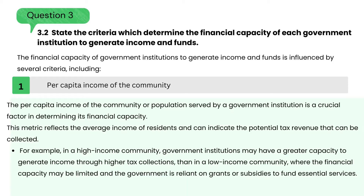State the criteria which determine the financial capacity of each government institution to generate income and funds. The financial capacity of government institutions to generate income and funds is influenced by several criteria, including: Criteria 1 — per capita income of the community. The per capita income of the community or population served by a government institution is a crucial factor in determining its financial capacity. This metric reflects the average income of residents and can indicate the potential tax revenue that can be collected. For example, in a high-income community, government institutions may have a greater capacity to generate income through higher tax collections than in a low-income community, where the financial capacity may be limited and the government relies on grants or subsidies to fund essential services.